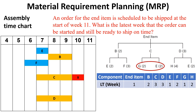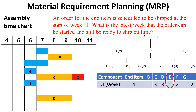The same for subassembly C — it needs items G and E to be assembled. Item G lead time is one week, so going backward from the start of week 7 by one week means that the order of item G must be released at the beginning of week 6. For item E, the lead time is one week, so going backward from the start of week 7 by one week means that the order of item E must be released at the beginning of week 6.